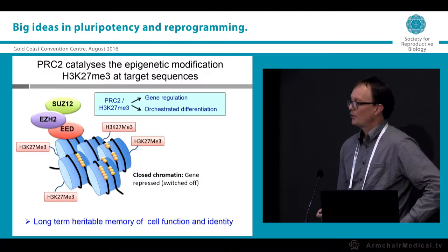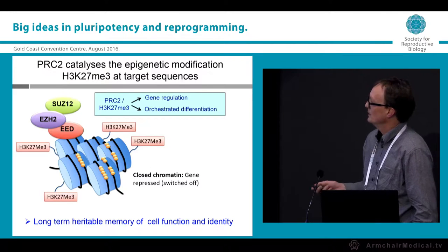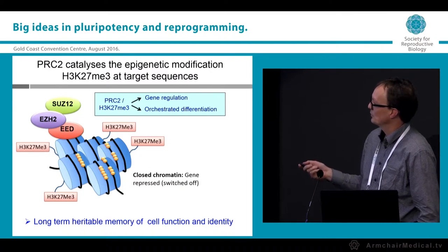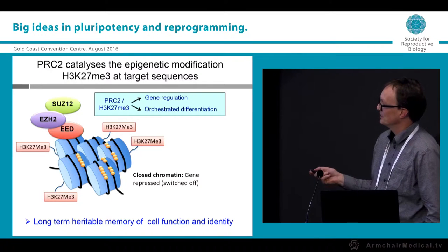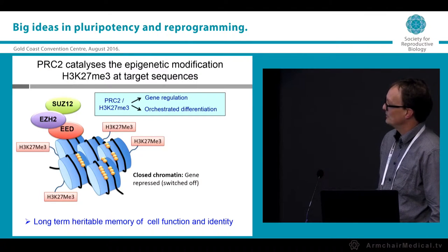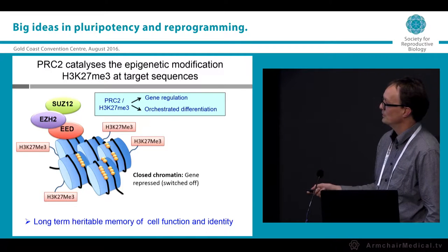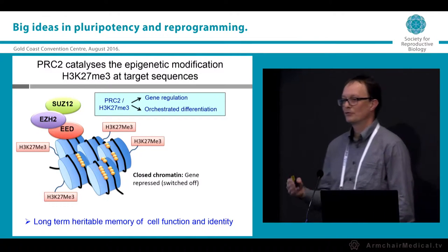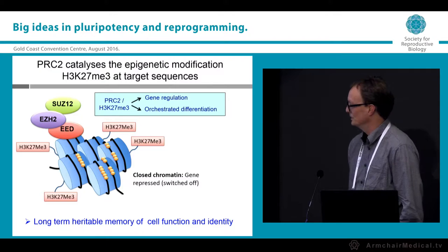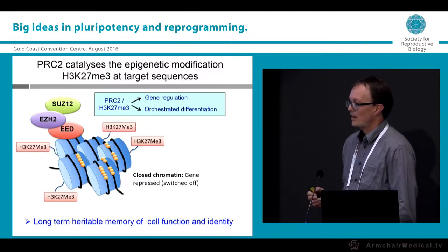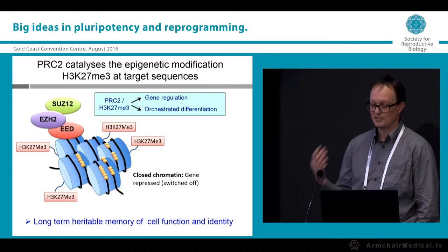Our work is focused on a histone-modifying complex known as Polycomb Repressive Complex 2, PRC2, made up of three core proteins: SUZ12, EZH2, and EED. These catalyse an epigenetic modification known as trimethylated H3K27, which leads to compressed chromatin and repression of cohorts of genes — including transcription factors such as homeobox genes. These changes are mitotically heritable and allow stabilisation of gene expression patterns and cell identity through time.